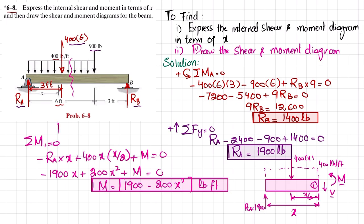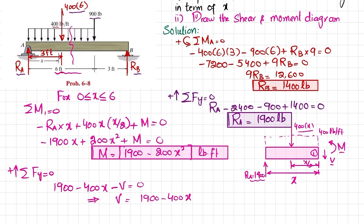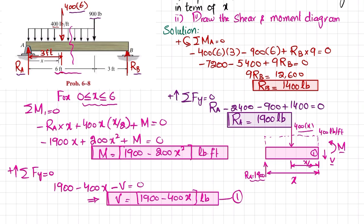This moment equation is valid for x between 0 and 6 feet. Now applying sum of forces in Y equals zero: 1900 − 400x − V = 0, so V = 1900 − 400x pounds. This is the shear force equation, also valid for 0 ≤ x ≤ 6 feet. Call these equation 1 (shear) and equation 2 (moment).